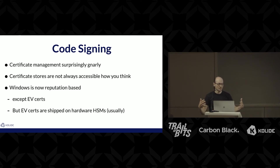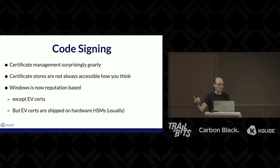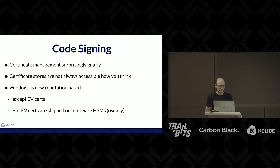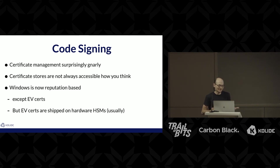Code signing has been another big topic. Certificate management is pretty weird — all platforms have different ways of managing certificates accessible through different means and tools. On Mac OSX, certificate management comes through the keychain; on Windows, it comes through the certificate stores, which aren't accessible in all the ways you might think — for example, I can't access the certificate stores on an SSH connection, only on RDP. Windows is also reputation-based now, so having a signing cert isn't enough to avoid SmartScreen prompts — you have to have built reputation. Unless you have an EV cert, but EV certs are generally only shipped on hardware, so if you wanted to run builds remotely or in the cloud, that's a problem you have to solve.